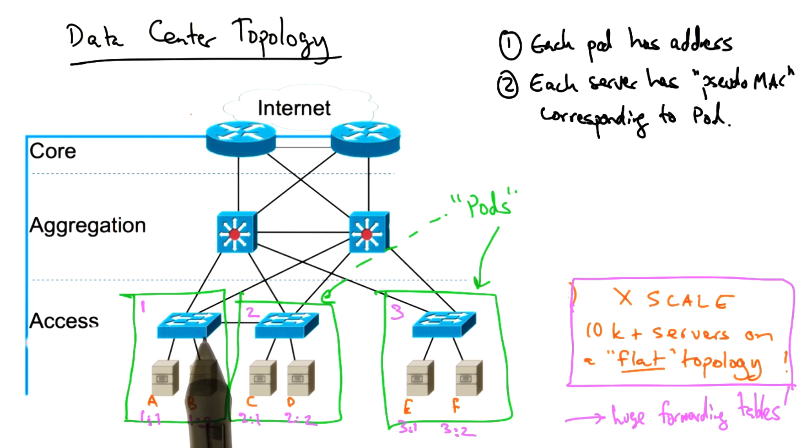Thus, switches in the data center topology no longer need to maintain forwarding table entries for every host. They only need to maintain entries for reaching other pods in the topology.